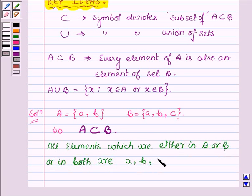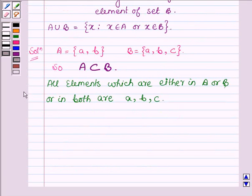a, b and c. And hence A union B is equal to the set {a, b, c}.